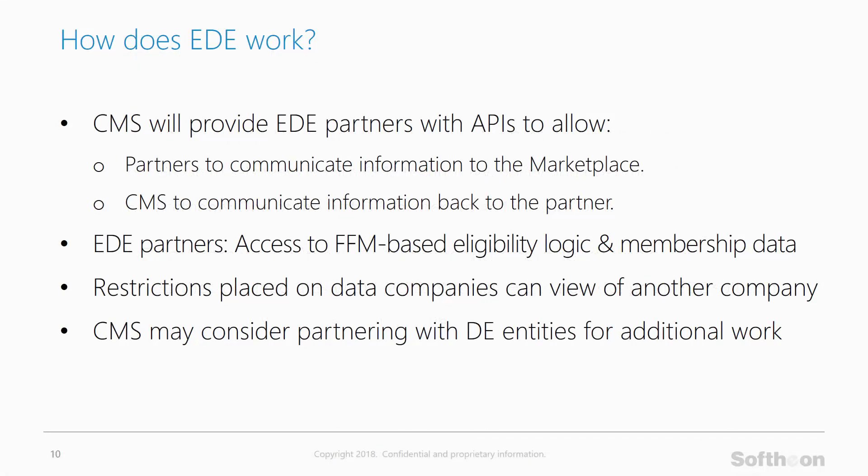To recap how the enhanced direct enrollment process will work: CMS will be providing EDE partners such as Softeon with a set of application program interfaces that allow them to communicate information about the consumer to the marketplace, and also allow CMS to communicate information back to Softeon. Through these APIs, EDE partners will have access to real-time FFM-based eligibility logic as well as current membership data. Restrictions will be put in place to ensure that one company cannot view another's consumer and membership data.